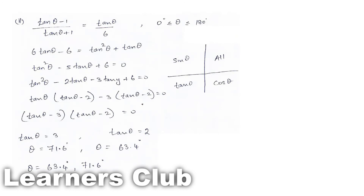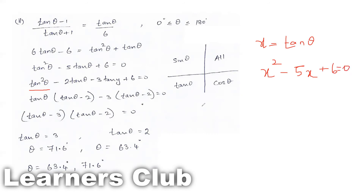Now I solve the quadratic equation. If you find it harder, you can let x equal tan θ and solve by substitution. With x substituted for tan θ the equation becomes x² minus 5x plus 6 equals 0. To factor, we need two numbers that multiply to 6 — so 2 and 3 — giving minus 2x minus 3x which equals minus 5x.